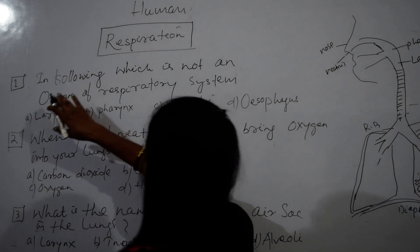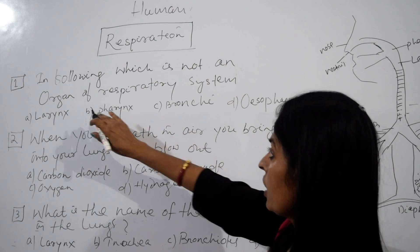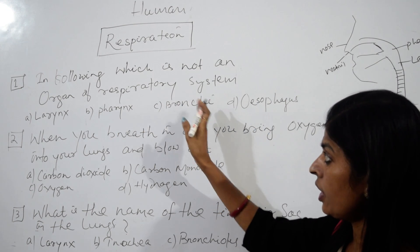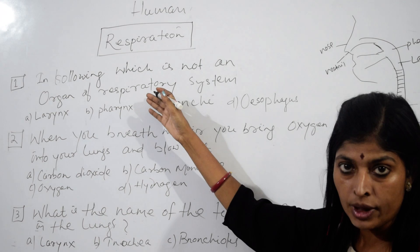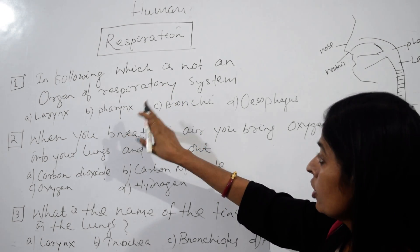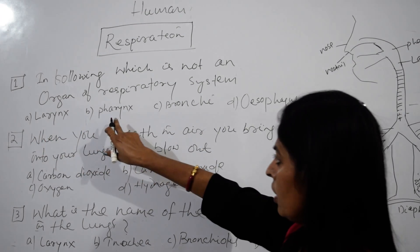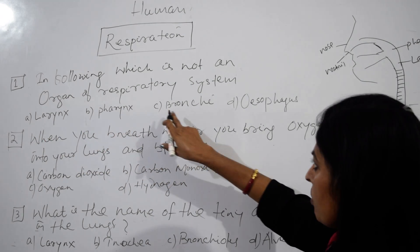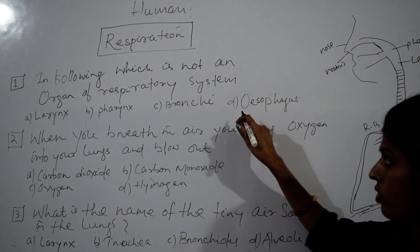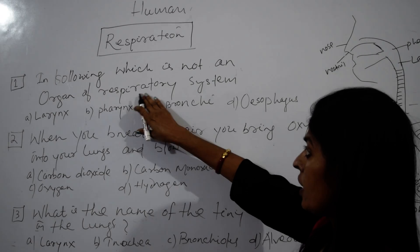The first question is: which of the following is not an organ of the respiratory system? Option one is larynx, two is pharynx, three is bronchitis, four is esophagus. In these four, which is not part of the respiratory system?